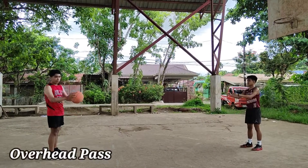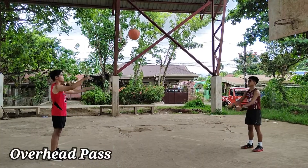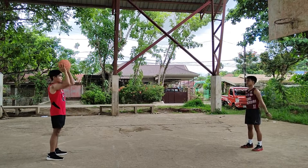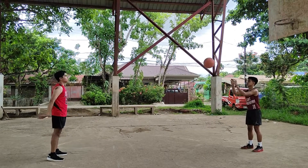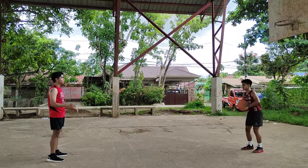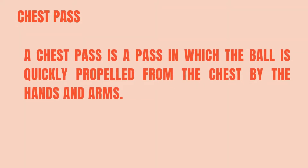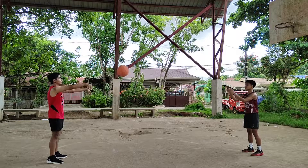The first one is the overhead pass. An overhead pass is when the player throws the ball with both hands starting from behind the head and releasing the ball out front. The second one is a chest pass. A chest pass is a pass in which the ball is quickly propelled from the chest by the hands and arms.